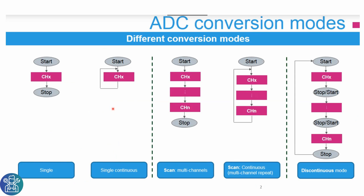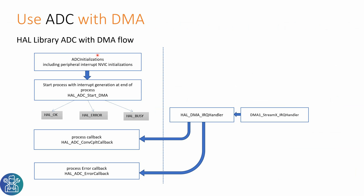It is also possible to do DMA with one buffer size, but that's almost the same as doing it with Interrupt. The way the code works is: first initialize the ADC, then start the DMA — you'll either get HAL_OK, HAL_ERROR, or HAL_BUSY. When the buffer of the stream is full, you get the Interrupt Handler and then you process the callback or you get an ERROR callback.